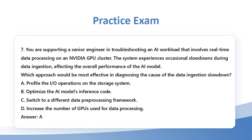Question 7: You are supporting a senior engineer in troubleshooting an AI workload that involves real-time data processing on an NVIDIA GPU cluster. The system experiences occasional slowdowns during data ingestion, affecting the overall performance of the AI model. Which approach would be most effective in diagnosing the cause of the data ingestion slowdown? A. Profile the I/O operations on the storage system. B. Optimize the AI model's inference code. C. Switch to a different data pre-processing framework. D. Increase the number of GPUs used for data processing. Answer: A.